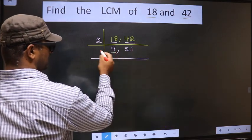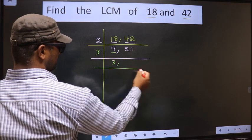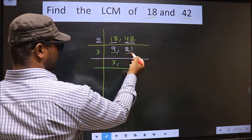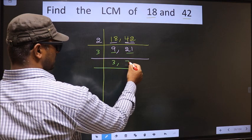Now we have 9 here. 9 is 3, 3 is 9. The other number 21, when do we get 21 in 3 table? 3, 7 is 21.